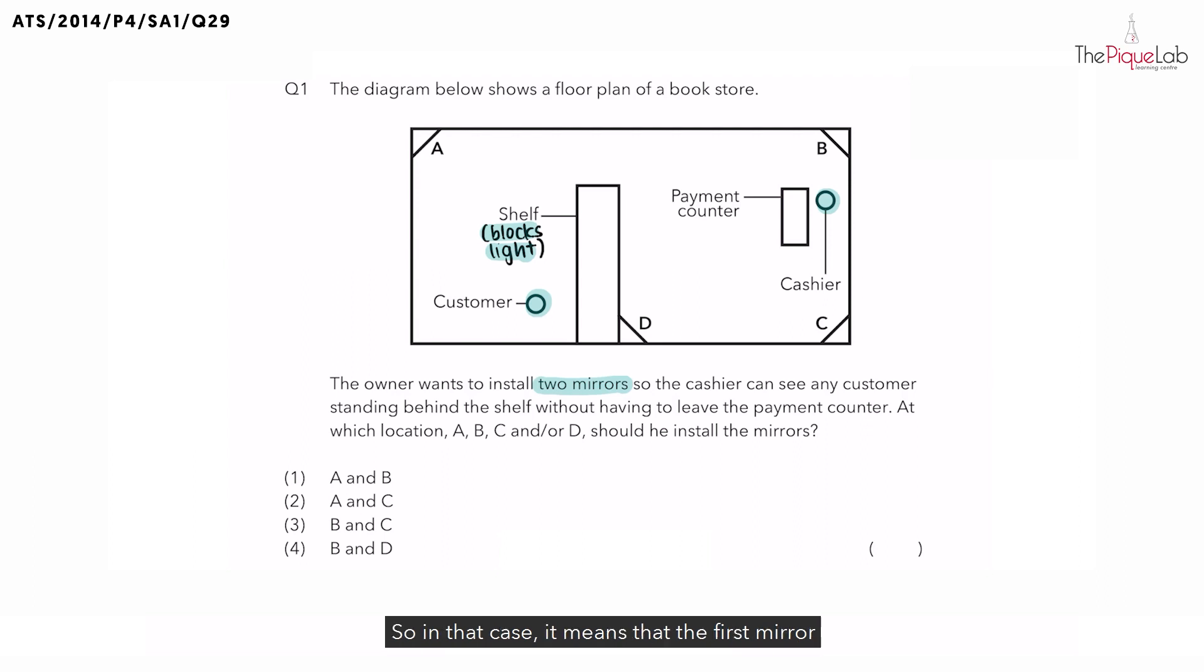So in that case, it means that the first mirror has to be position A. Why? It is so that light reflected off the customer is able to travel to mirror A without getting blocked.